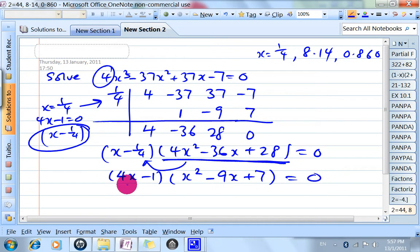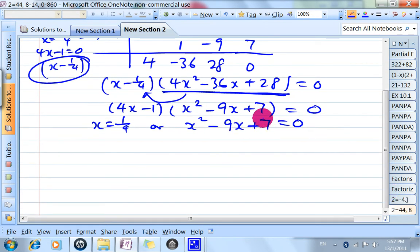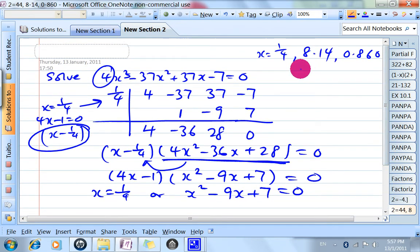So we factorize it like that: x = 1/4 or x² - 9x + 7 = 0. This one cannot be factorized further, which we knew from the other two solutions.